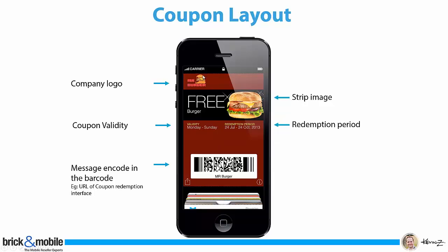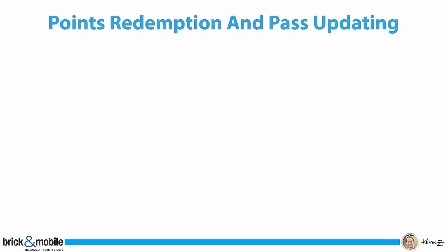You have the company logo on top. You have your strip image, which usually says what you're going to get. You have your fine print validity. You have your messages over here. It can be a QR code that can be redeemed by any staff in store, or you can have a barcode that's integrated with POS. And then you redeem it.